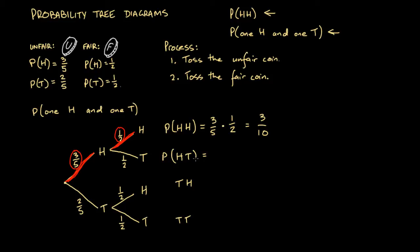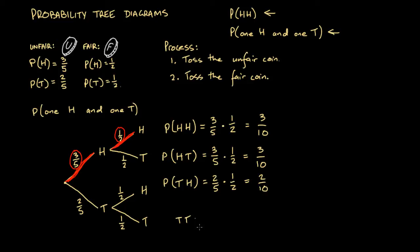The probability of tails then heads is 2/5 — associated with tails on the first flip — multiplied by 1/2, giving 2/10. And the probability of tails then tails is also 2/5 times 1/2, which is again 2/10.